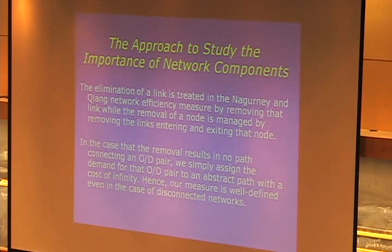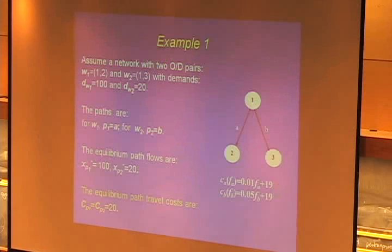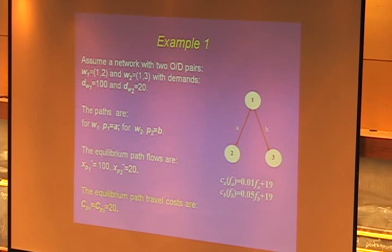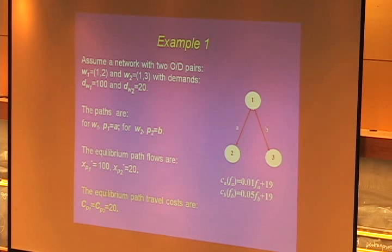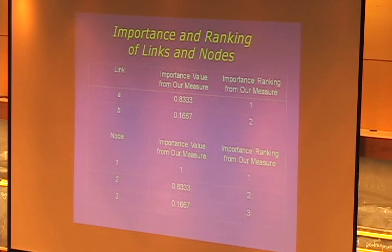We can identify the importance of a network component as the relative drop: the original efficiency minus the efficiency once you apply the destruction to the network, divided by the original efficiency. If we get disconnection, we assume the demand will be allocated to a path with infinite cost, so everything is always well-defined. For a simple network with three nodes and two origin-destination pairs - node 1 to node 2, and node 1 to node 3 - this measure captures flows, which is important because which link is most important should depend on how much that link is used. Link A is more important because it has more flow on it, and we can rank which nodes are most important.